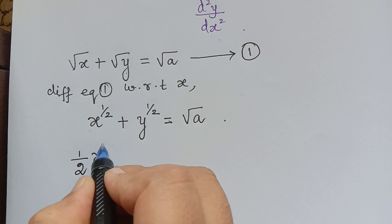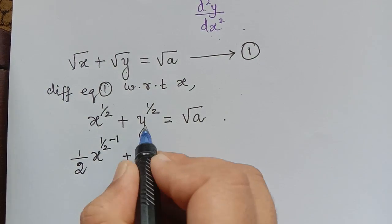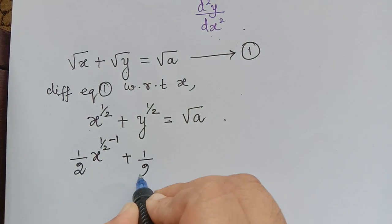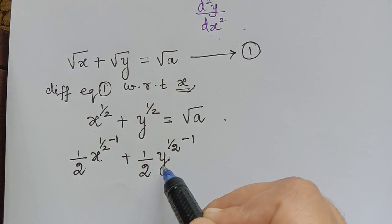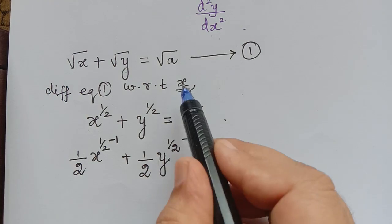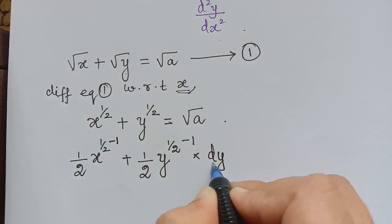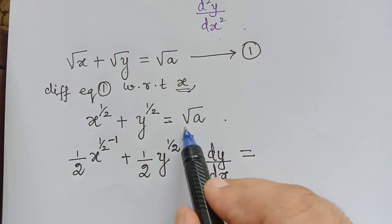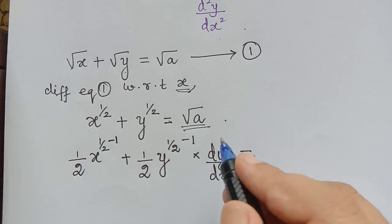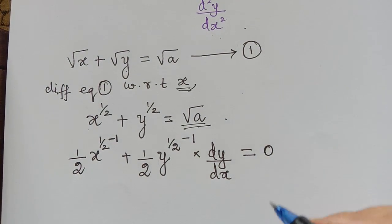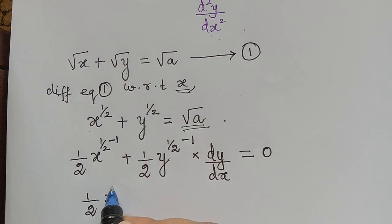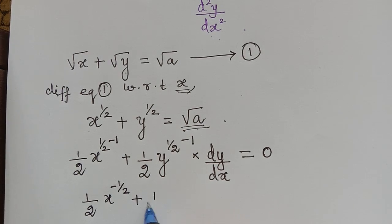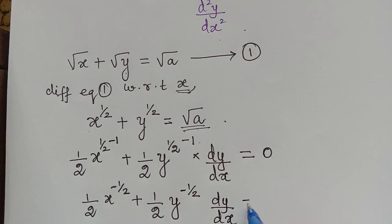So it is (1/2)x^(1/2 − 1). Similarly we differentiate y, giving (1/2)y^(1/2 − 1), and because we are differentiating with respect to x and we have y here, we apply the chain rule and multiply by dy/dx. The right-hand side is zero because √a is a constant. Rewriting: (1/2)x^(−1/2) + (1/2)y^(−1/2) · dy/dx = 0.